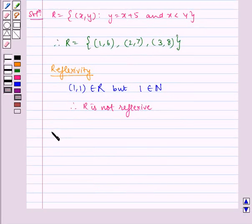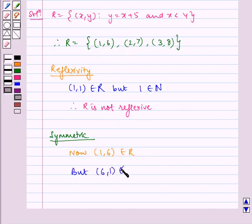Now let's see the symmetric property of the relation. Now, we can see that (1, 6) belongs to R, but (6, 1) does not belong to R. Therefore, R is not symmetric.